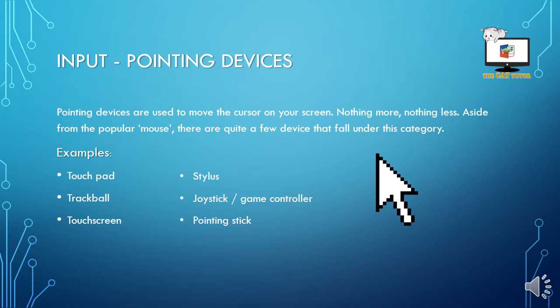Input pointing devices. Pointing devices are used to move the cursor on your screen. You may have noticed if you have a personal computer or a laptop that there is a little white arrow on your screen that moves around as you move your mouse or, if you have a laptop, your touchpad. These are all pointing devices — they do nothing more and nothing less than move that little white arrow on your screen.